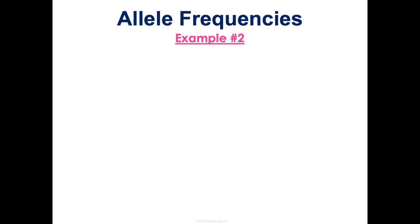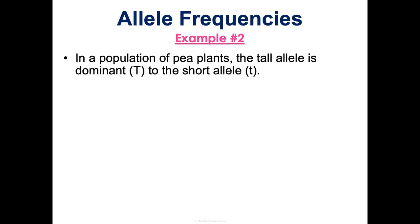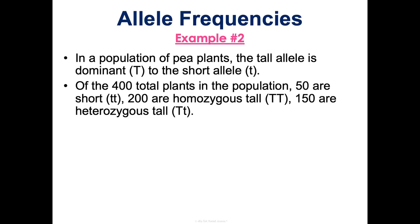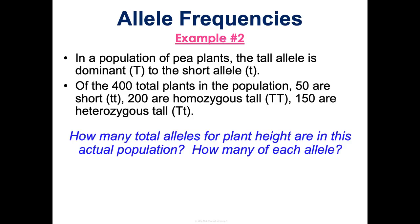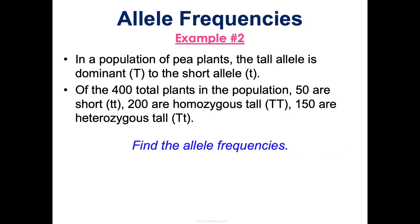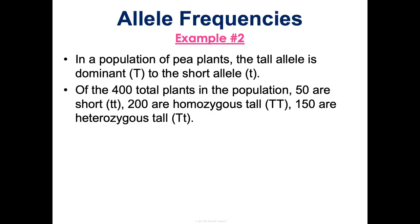Here's another example — I'm not going to give you the answers, I want you to work through this and we'll go over it in class. We're looking at P-lance plants with a tall allele — you're either tall or short. Walk through the exact same process: find the total alleles first, then how many of each, then find the allele frequencies p and q. From there, also find the genotype frequencies — how common is it to be little t little t, big T big T, and big T little t. Try it and we'll go over it together.